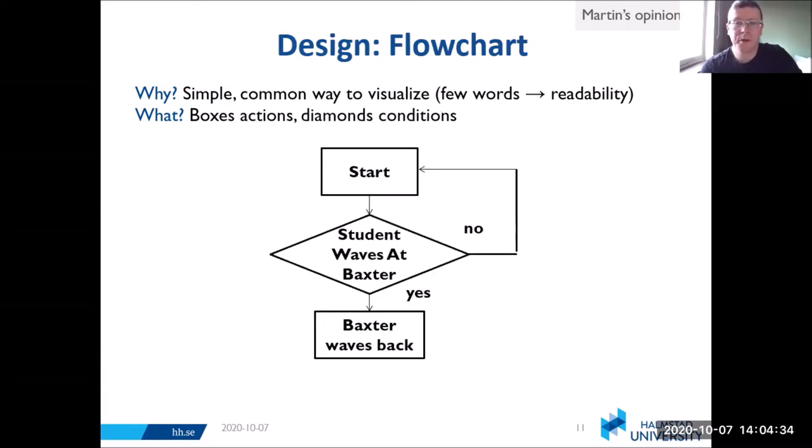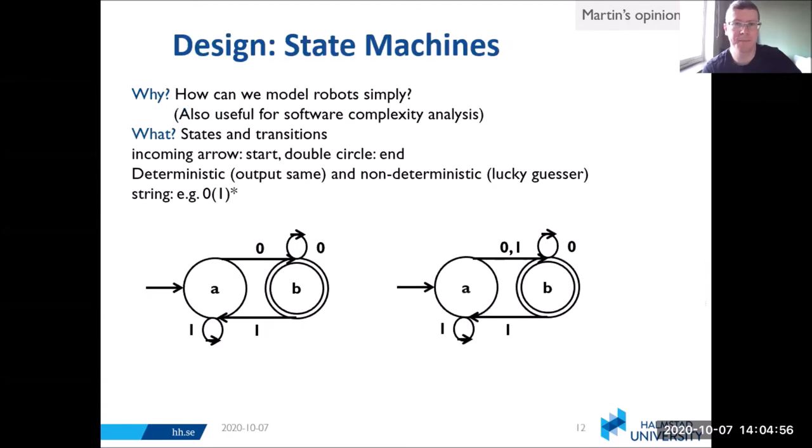Flowcharts are also a very common kind of diagram. We use them for the same reason: because they're very common and everybody knows them. Here, boxes represent actions and diamonds are conditions. So here, if we check if a student waves at Baxter, if yes then Baxter will wave back. If not, then we loop back again and check again.